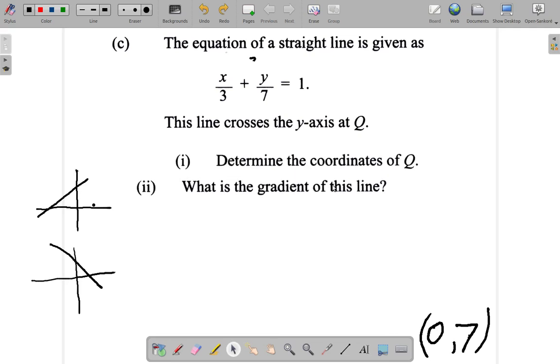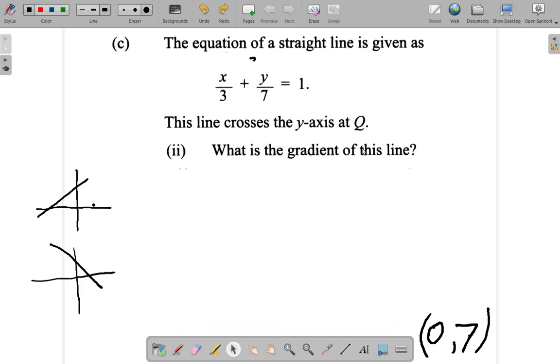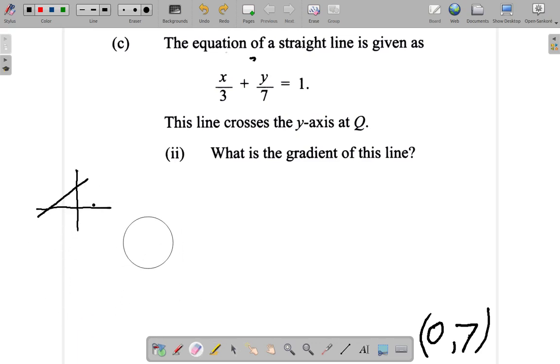Let's look at what the gradient of this line is. Just put it up here to make some space. Now, let me just erase some of these things that we have here, the 0.7. Let me write it up here, it's more convenient. 0.7, that was the answer for part 1.